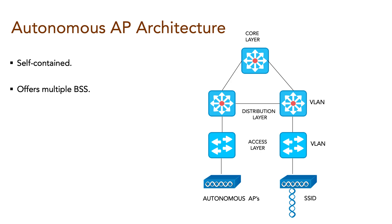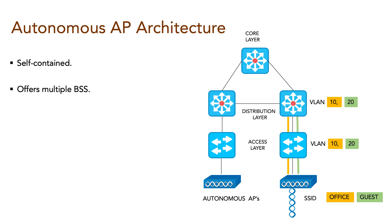Here in this topology, access points are offering two SSIDs — office and guest. These SSIDs correspond to wired VLAN 10 and VLAN 20 respectively. Those VLANs are trunked from the distribution layer switch to the access layer and further extended to the access point.